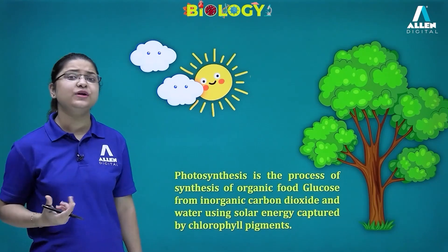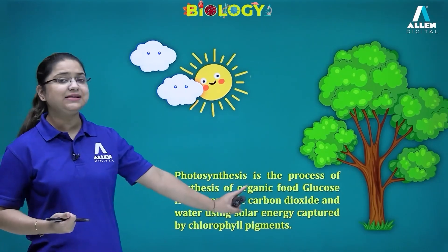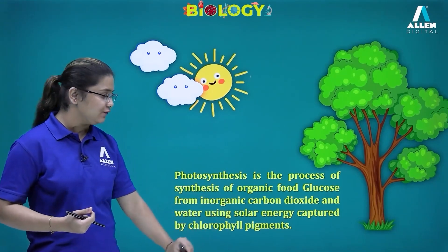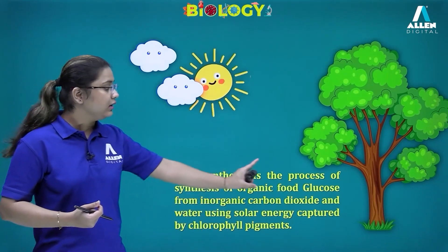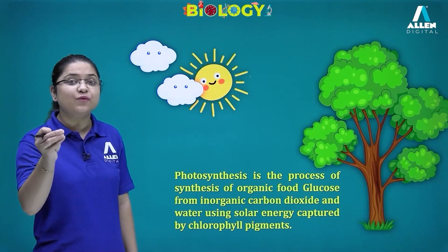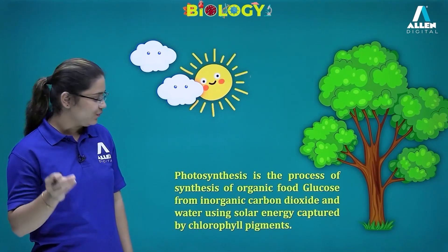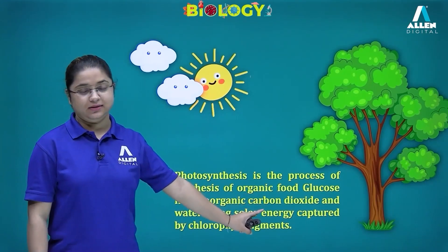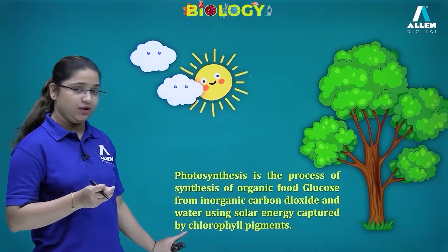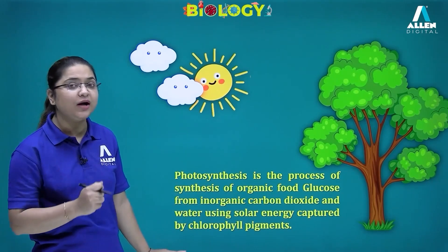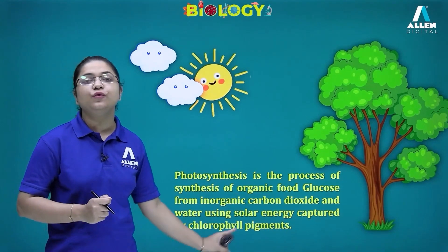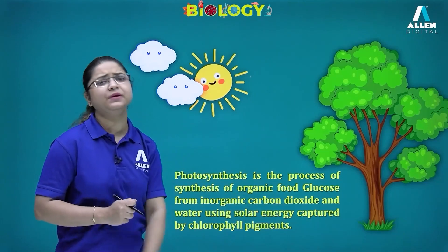Photosynthesis is a process of synthesis of organic food — the glucose, with formula C₆H₁₂O₆ — from inorganic materials, which are carbon dioxide and water, using the solar energy captured by the chlorophyll pigments.